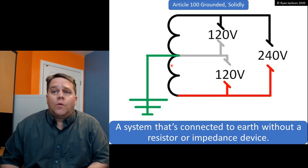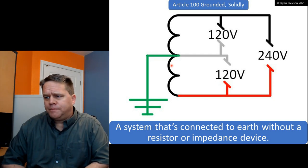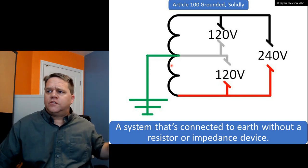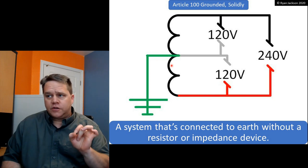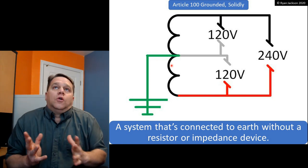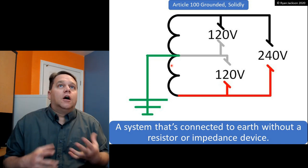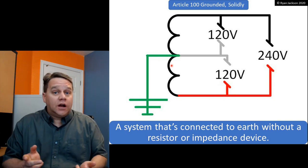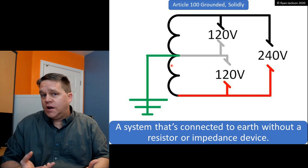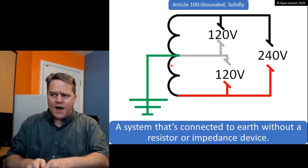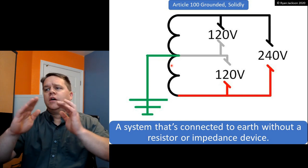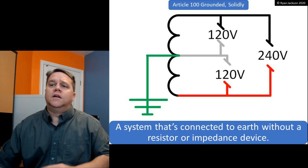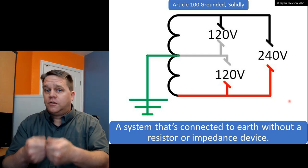It's important to understand conceptually that this is a single-phase transformer — and all transformers are single phase. There is no three-phase transformer. A three-phase transformer is three things: three single-phase transformers wired together in a particular configuration. It's three single-phase transformers connected in a Y, or three connected in a delta. A three-phase transformer is a box with three transformers in it.